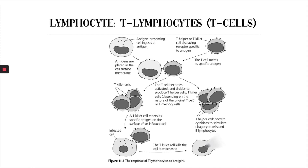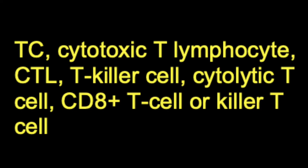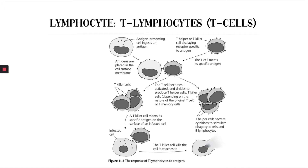Killer T cells have many names, but their main functions are: one, to kill cancer cells, and two, to find and destroy infected cells that have been turned into virus-making factories. To do this, they need to tell the difference between infected cells and healthy cells with the help of antigens. The T killer cell meets the antigen on the surface of the infected cell, and the receptor on the T cell must exactly fit the antigen of the infected cell. If it does not, the killer T cell will not be able to kill that cell.